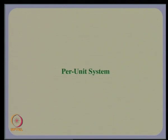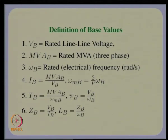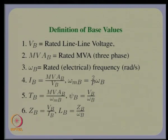Let us now move on to an important step: getting into the per unit system. If you look at the models we have used, we need to introduce a per unit system so that we can use this model readily for all future studies in which all data will be given in per unit. The first step in defining per unit is to define the base values. The typical base values used for a synchronous machine are: V_B is the rated line-to-line voltage, MVA base is the three-phase rated MVA of the machine, and omega_B is the rated electrical frequency in radian per second.